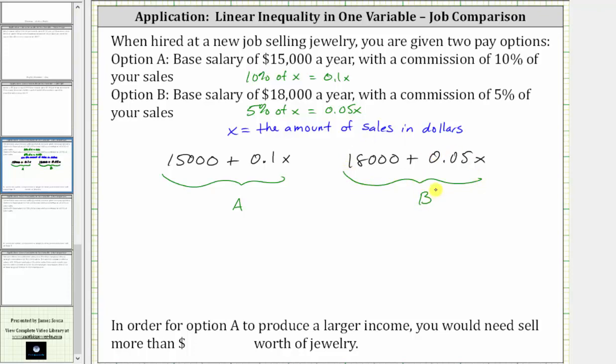Since we're trying to determine what the sales has to be so that option A produces a larger income, we want to know when the expression 15,000 plus 0.1x is greater than the expression 18,000 plus 0.05x. Now let's solve the inequality.